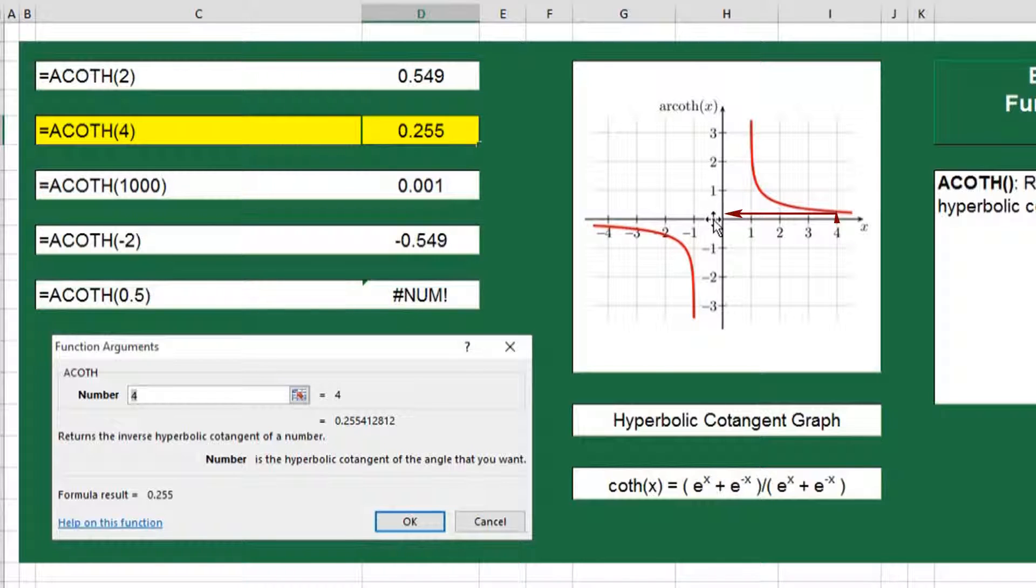Now let's try with the value of 4. We can work our way along to find where the line intersects the number 4 on the x coordinates and you'll see that it returns a value of 0.255 on the y coordinates.